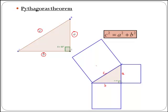What Pythagoras is saying, if you think about areas, is that the area of this square is equal to the addition of these other two areas.